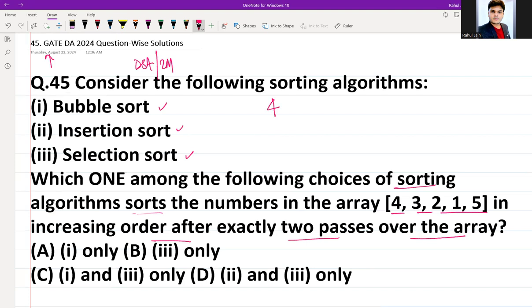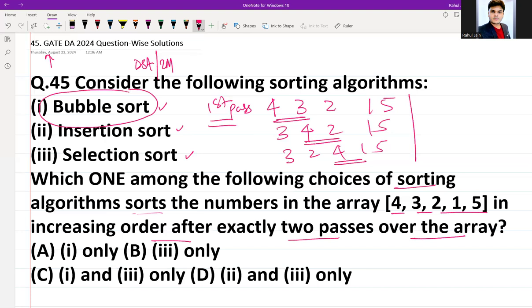So we are having 4, 3, 2, 1, 5. If I am going to implement bubble sort, then in the first pass, 4 and 3 will be compared and swapped. So 3, 4, 2, 1, 5. Again 4 and 2 will be compared, 2 is less than 4, again swapped: 3, 2, 4, 1, 5. 4 and 1 again compared, so it would be 3, 2, 1, 4, 5. And 4 and 5 will be compared but now it is okay. So in the first pass this is the result.